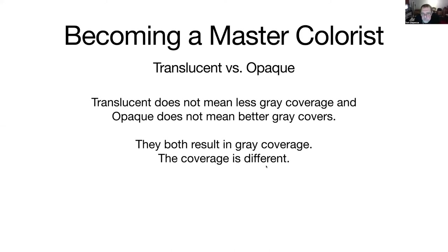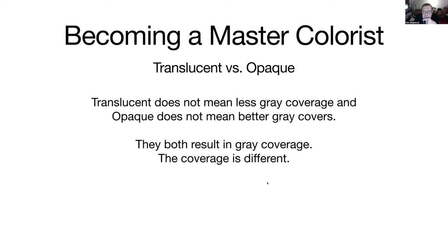If we have two colors — one is an American light brown and the second is a European light brown — most people say the European color covers gray better. It's not that it covered it better; it covered it differently. You do have darker coverage with most European colors, but that's because of the dye load. I'll explain that a little better as we go on.